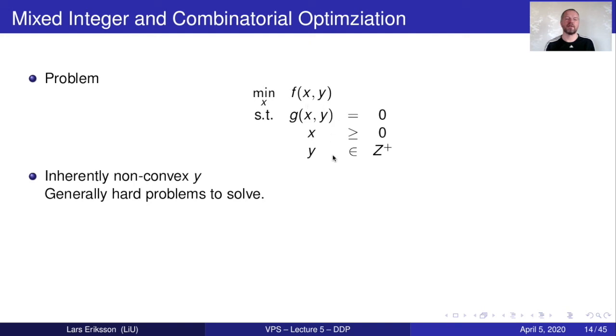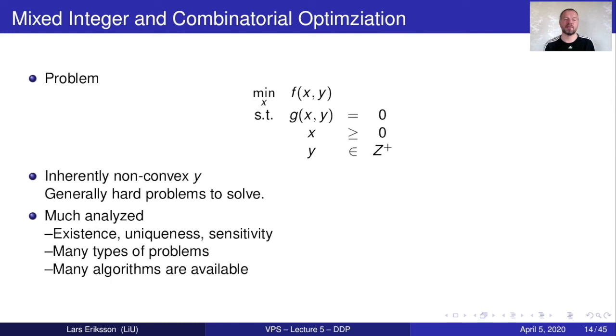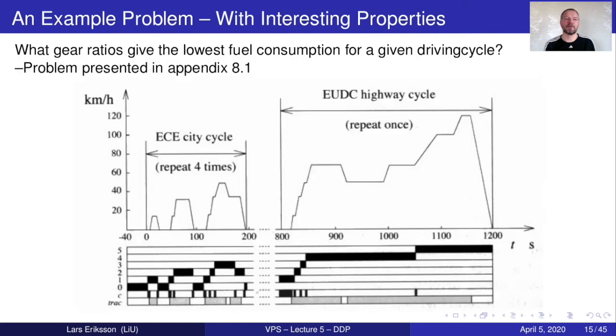And even more complex problem is the mixed integer and combinatorial optimization problem where we have the goal function. We have the constraints and where a set of variables belongs to, for example, the integer part. So we can select them on one or another solution. We cannot choose a continuum between these solutions. This is generally a very hard problem to solve. It's also been much analyzed with respect to existence, uniqueness and sensitivity. And there are many types of problems. For example, network problems are of this type when we're selecting which path should we take going from A to B. And there are many algorithms available for solving these kinds of problems. An example problem that we have discussed, we have looked at what gear ratios give the lowest fuel consumption over a given driving cycle. And the problem is presented in Appendix 8.1, the books. And I have talked about that previously.